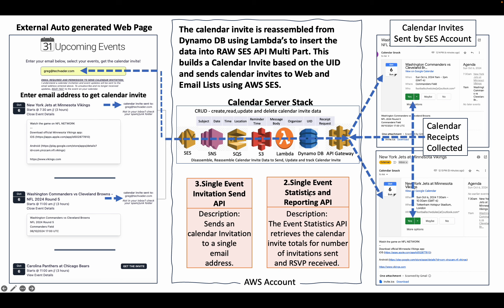The single event stats and reporting API retrieves the calendar invites for the totals of invitations sent and RSVPs received. The calendar invite is reassembled from DynamoDB using the Lambdas to insert data into a raw SES API multi-part call, which builds a calendar invite based on the UID. That's an important part of our stack overall.